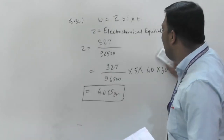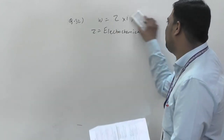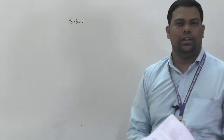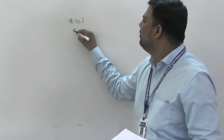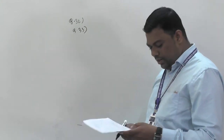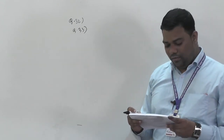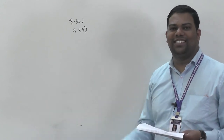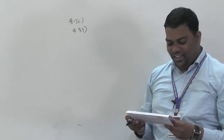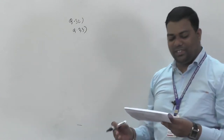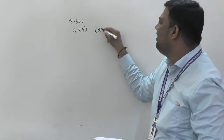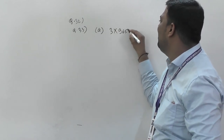First calculate the electrochemical equivalent Z. Question number 33: the amount of charge for obtaining one mole of aluminium from Al³⁺ — immediately you can tell: 3 × 96500. Option is small A.